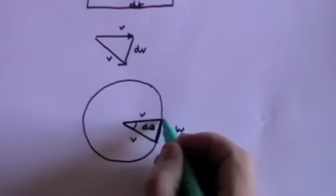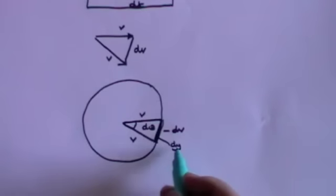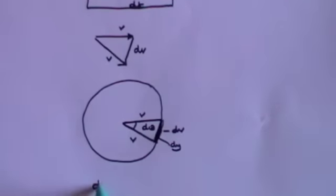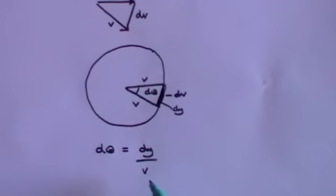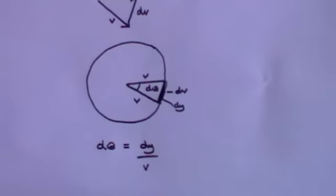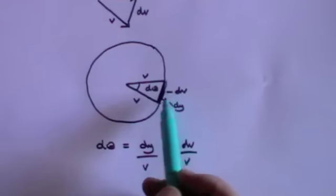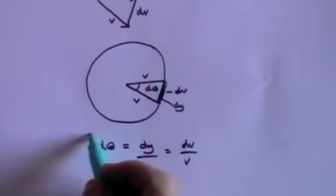We want to find the straight-line dv. The arc length of the velocity circle, which I'll call dy, divided by the radius v, gives the angle: dθ equals dy divided by v, by definition of a radian. But here is the trick: if dθ is very small, then the arc length effectively becomes the straight-line length. So we can say, provided dθ is small, that dθ equals dv divided by v — because when dθ is very small, the arc length becomes a straight line. That gives us our third equation.